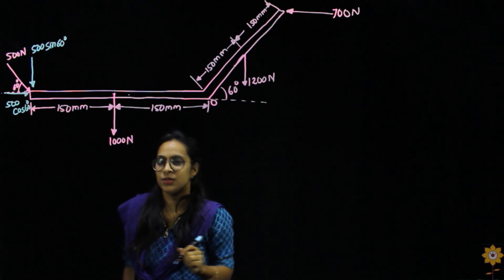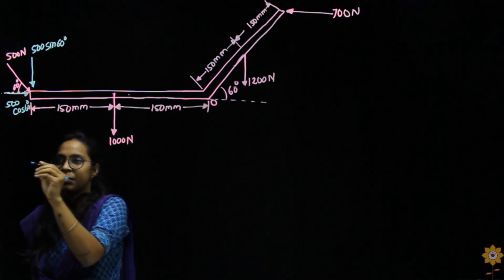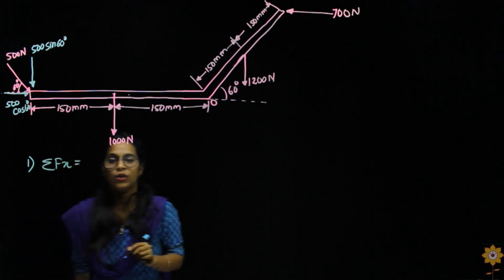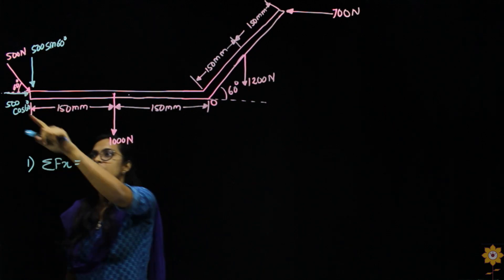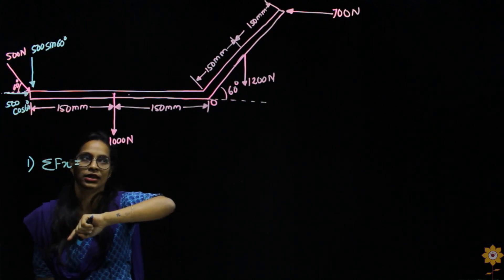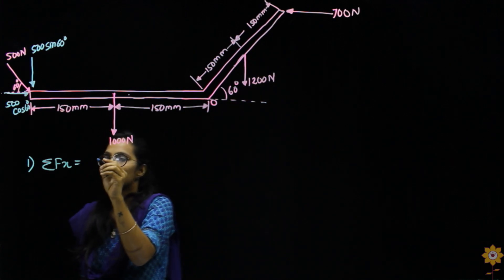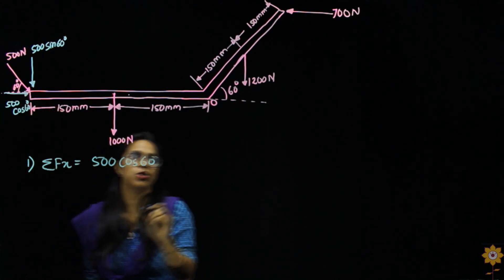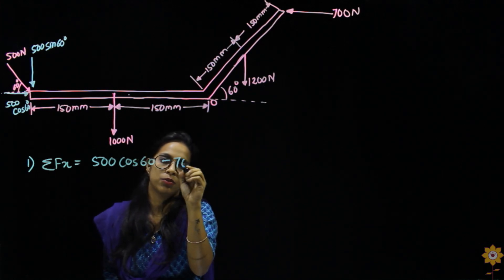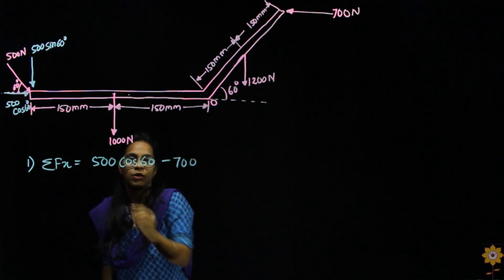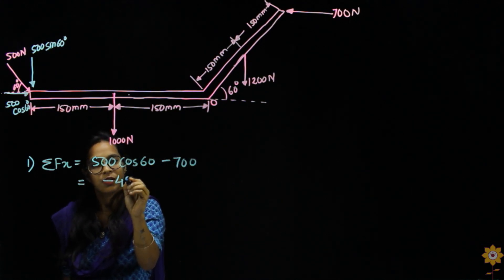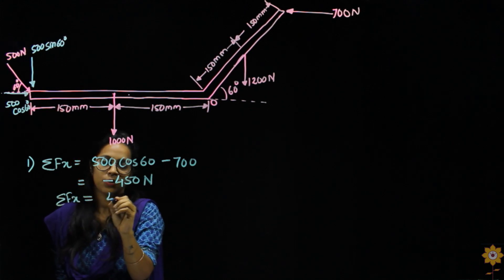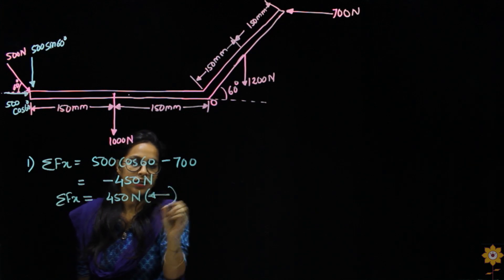Now all the forces are resolved. Our first step is to find the summation of Fx — all forces in the x-direction. We have 500 cos 60 in the positive x-direction and 700 in the negative x-direction. So it is 500 cos 60 minus 700, which gives us minus 450 newtons. Since it's negative, summation of Fx equals 450 newtons in the negative direction.